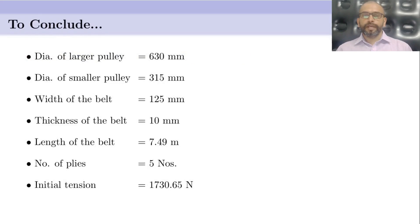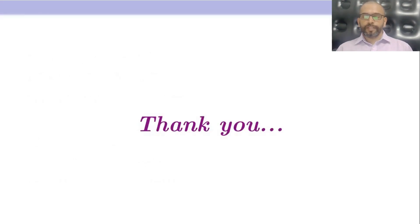To conclude: diameter of the larger pulley = 630 mm; diameter of the smaller pulley = 315 mm; width of the belt = 125 mm; thickness of the belt = 10 mm; length of the belt = 7.49 m; number of plies = 5; initial tension = 1730.65 N. Thank you.